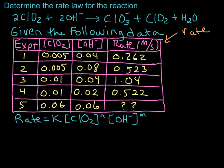We're going to use this data to figure out the orders. The rate of the reaction is given in molar per second, and all concentrations are in molarity. To find these orders, we want to find experiments where the concentration of one reactant is varied and the other is held constant, and then look at the effect on the rate.